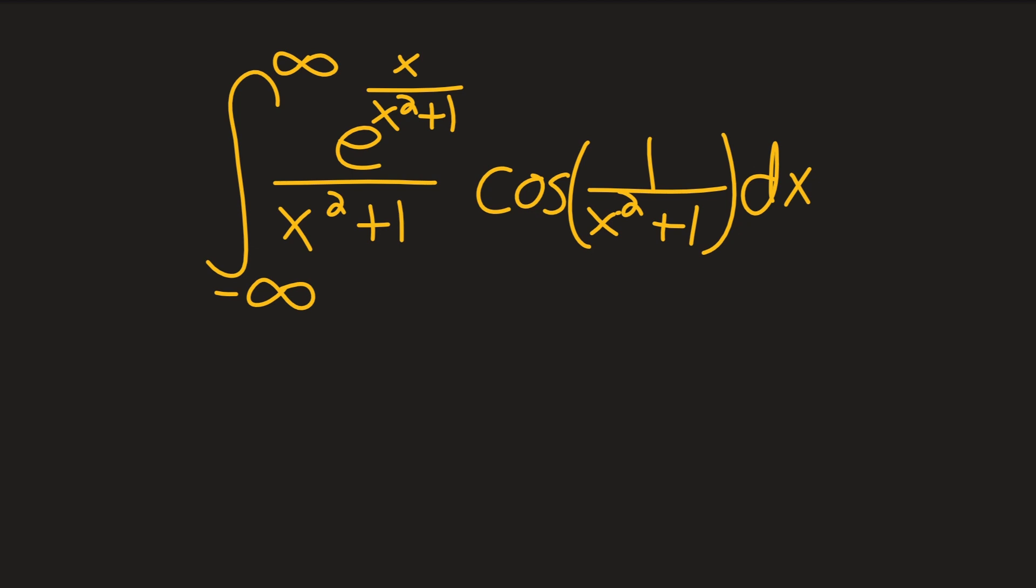So you'll notice we have this cosine term right here. And one way we can write cosine, as you might be familiar, is just as the real part of e to the θi. But our θ in this case, our argument, is just 1 over x² + 1, meaning that our cosine term right here is just the real part of e to the i over x² + 1 right here.